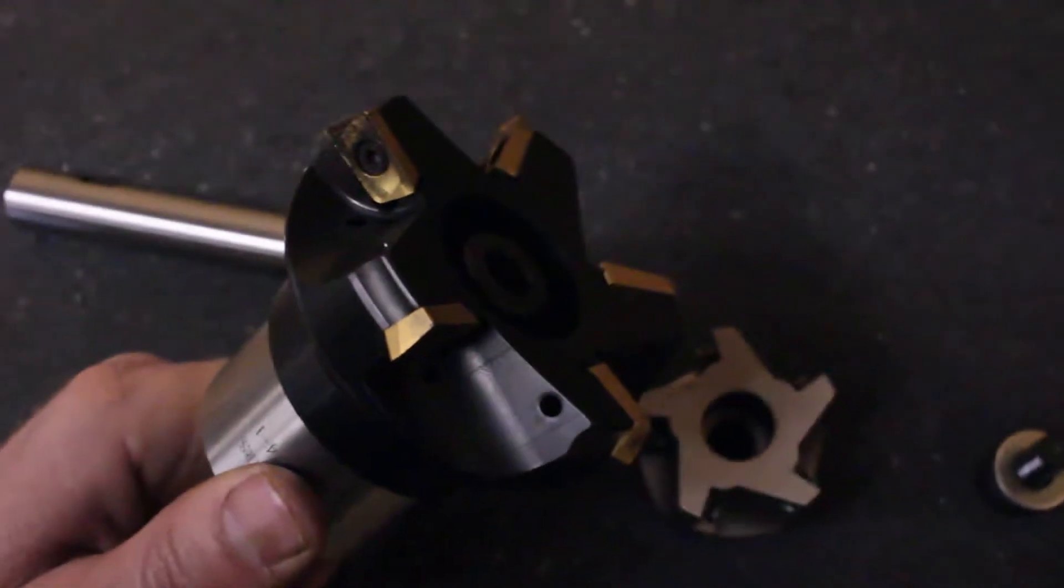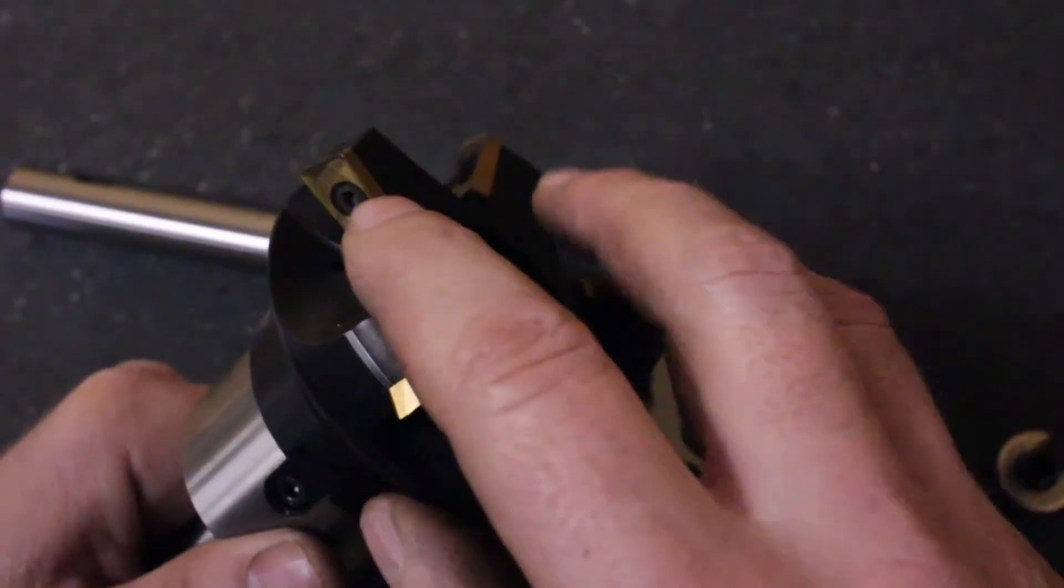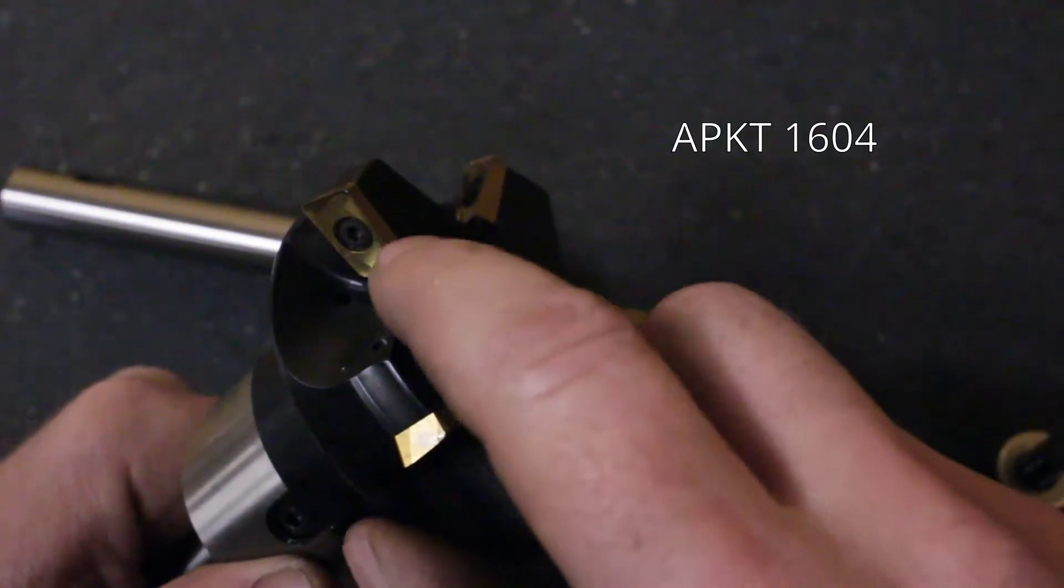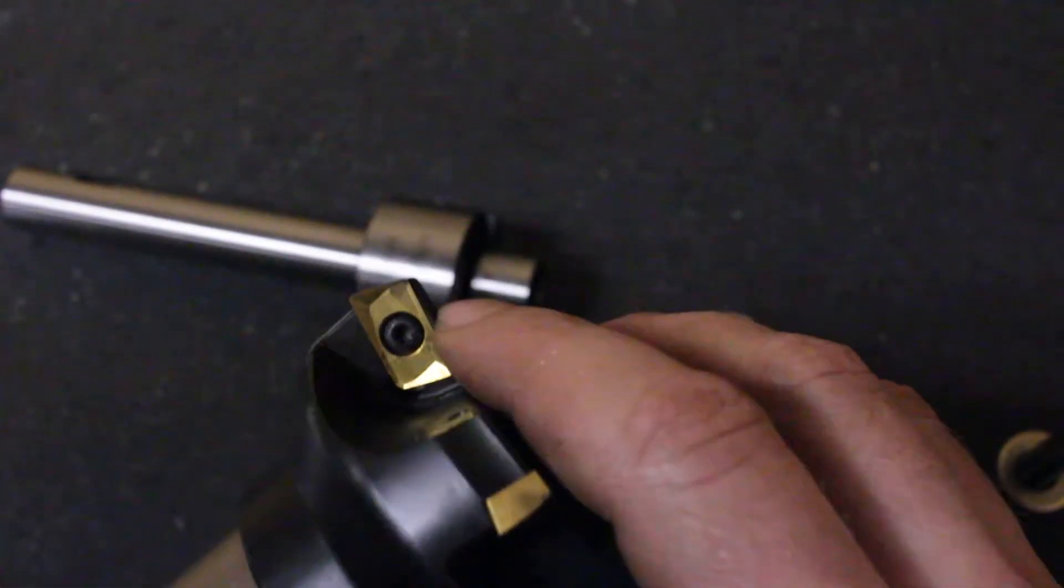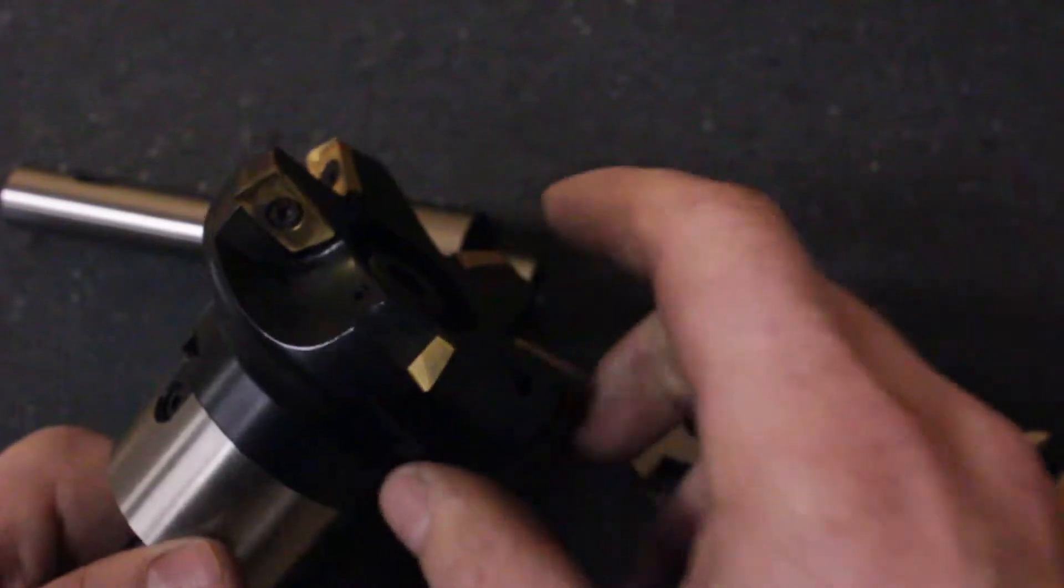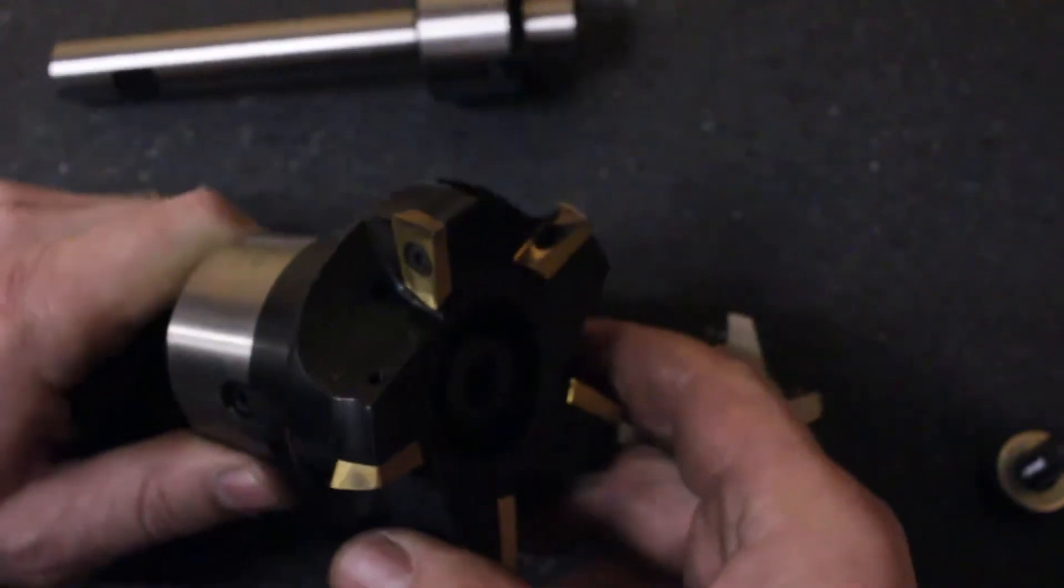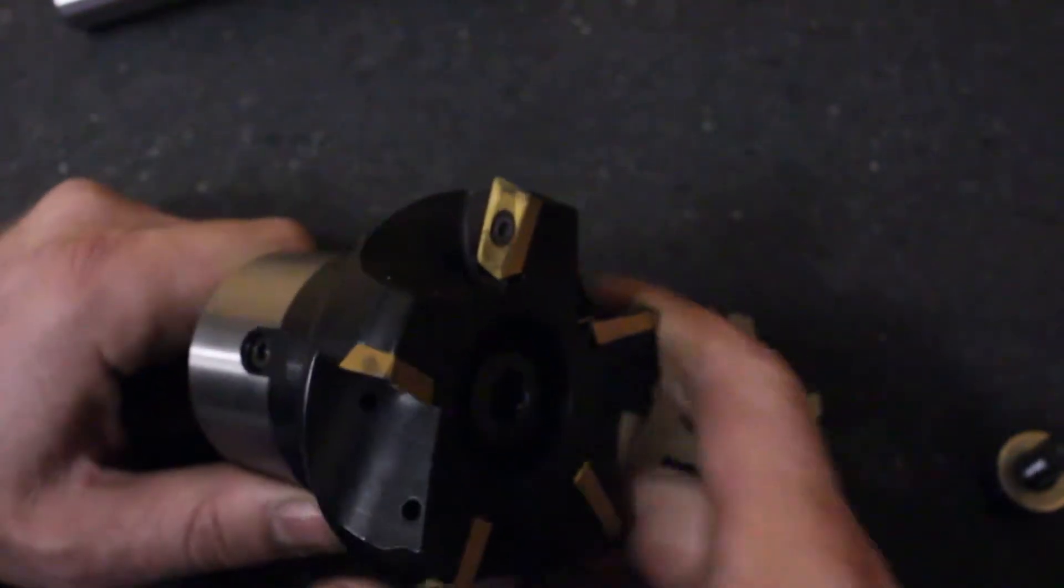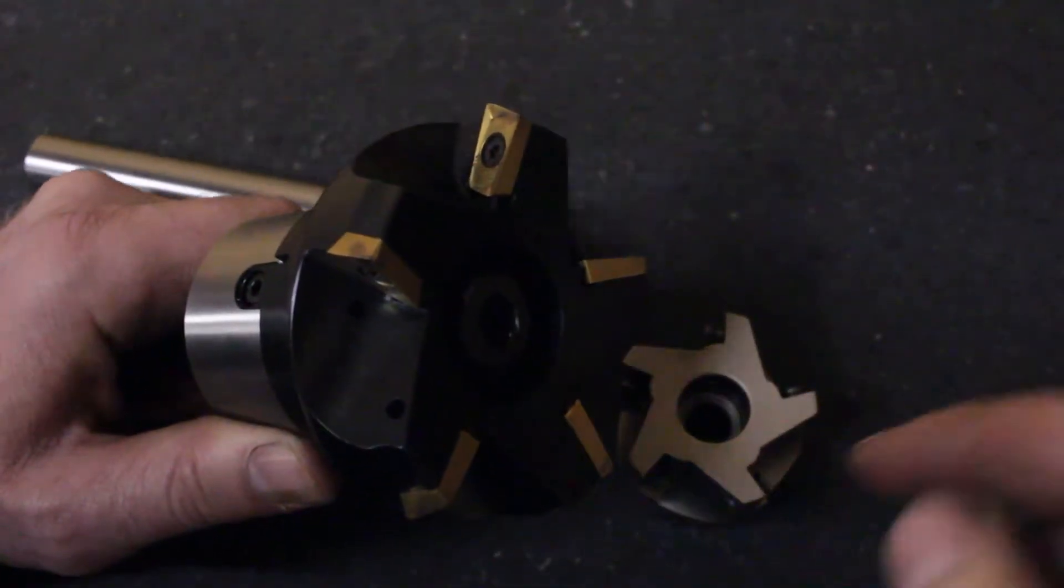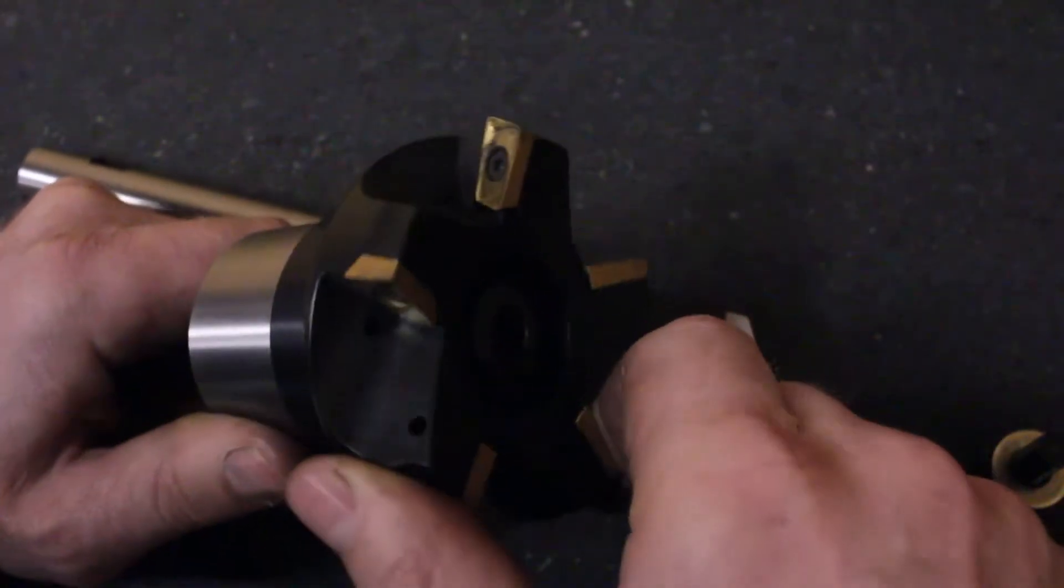This is my old, not that old, but the first face mill that I got and it uses these APK 1604 inserts, something like that. And these ones are cheap inserts. First of all, this cutter uses the odd corners. There's a primary corner here and this cutter is designed to use the odd corners, which is nice to have one of each. That's another reason why I wanted to get this cutter so I could use all four corners of the inserts I get.